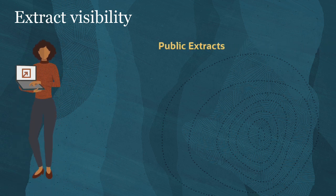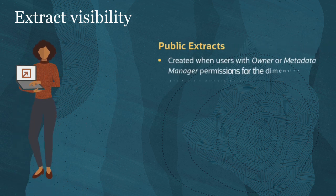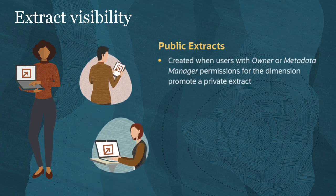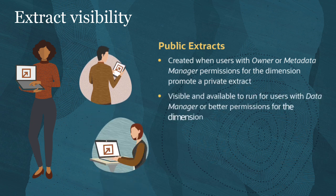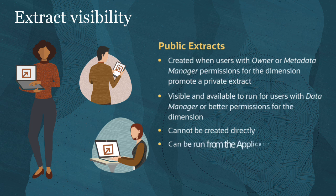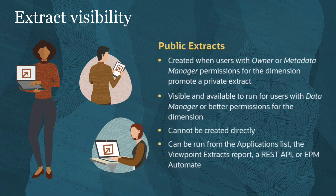If you have owner or metadata manager permission on a dimension, you can promote a private extract to public so that other users can see and run it. Public extracts are visible and available to run for users with data manager or better permissions on the dimension. You cannot create a public extract directly. You can run public extracts from the Applications list, the Viewpoint Extracts report, a REST API, or EPM Automate. They can be run to a local file or a global connection.